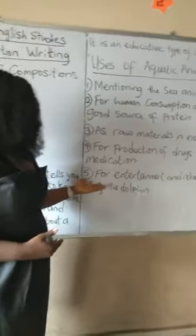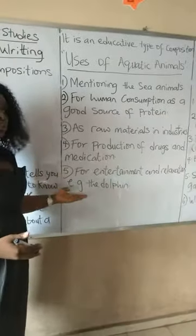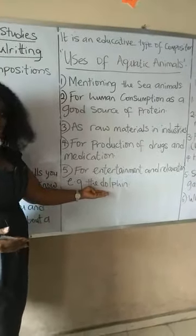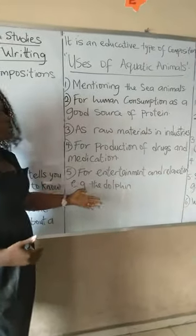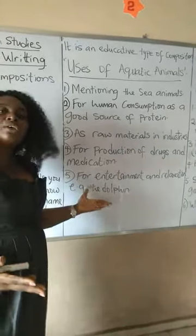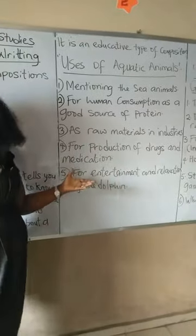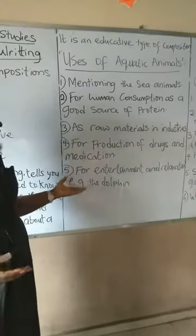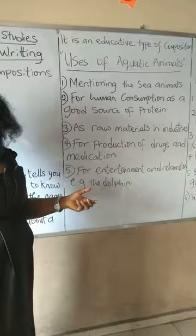Then you have entertainment and relaxation. I gave you an example — the dolphin is mostly used for such. I would want you to tell me where we can go to see them, how they perform, and how they entertain and help us in relaxation.